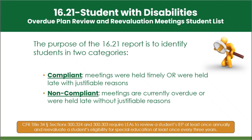The purpose of the 1621 report is to identify students in two meeting timeliness categories: compliant or non-compliant. This aligns with the requirements to review a student's IEP at least once annually and reevaluate a student's eligibility at least once every three years.